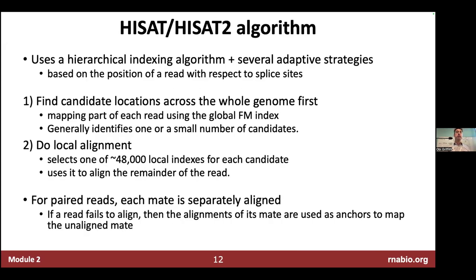HISAT uses a hierarchical indexing algorithm with adaptive strategies based on read position relative to splice sites. It first finds candidate locations using the global index — looking for a match of at least 28 base pairs — then switches to sensitive local alignment using local indexes. HISAT has one large global index and 48,000 local indexes. With paired reads, each read is mapped separately, but if one read fails to align, the aligned mate is used to anchor the unaligned one.